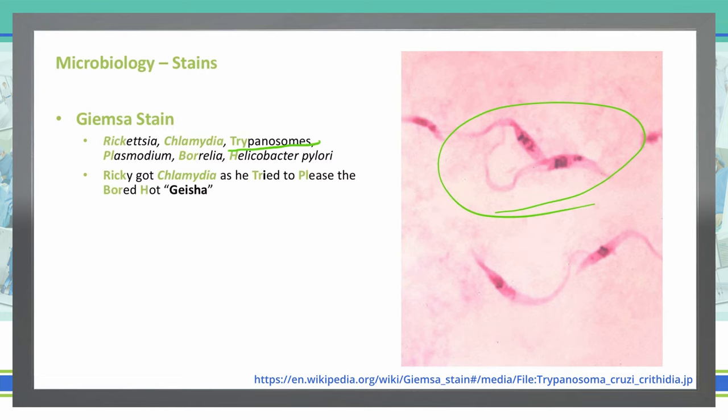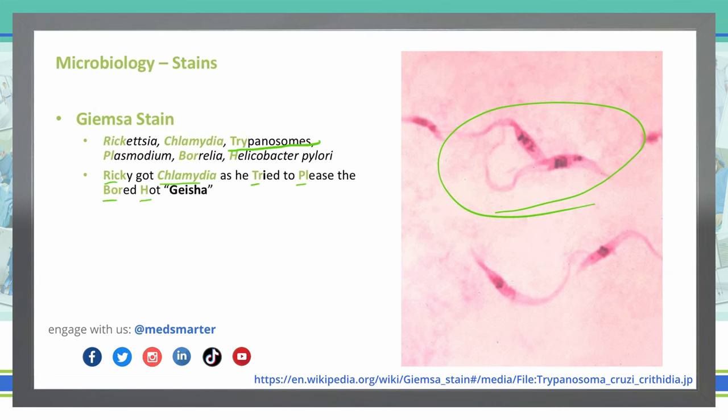We can remember the Giemsa stain organisms with the mnemonic: 'Ricky got chlamydia as he tried to please the bored hot geisha.' Ricky is Rickettsia, chlamydia is Chlamydia, the TR in 'tried' is trypanosomes, the PL in 'please' is Plasmodium, BO is Borrelia, and H is Helicobacter pylori.